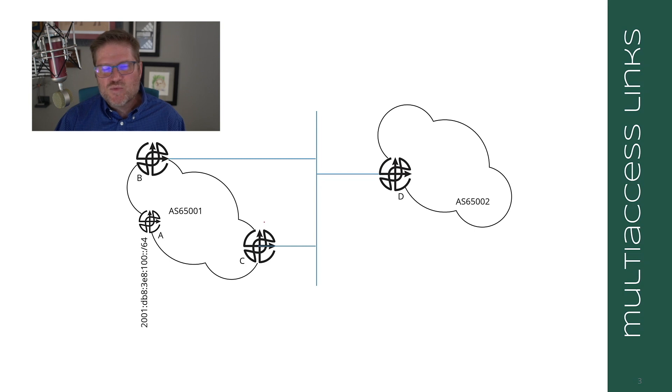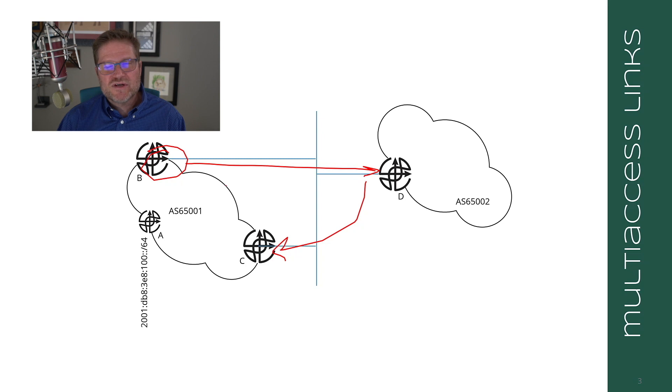Now, in this case, what could happen is that B could advertise 100 colon colon slash 64 to D with a next hop of C because they are on the same multi-access link. This is a perfectly valid configuration within BGP. So it is possible for a BGP speaker to advertise a next hop other than itself as the next hop towards a destination. Now, this is used in other situations other than multi-access networks, but we won't spend a lot of time working through those situations.